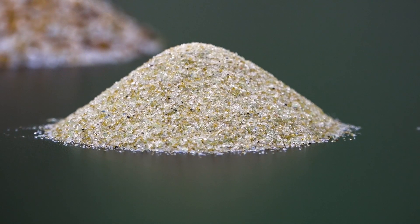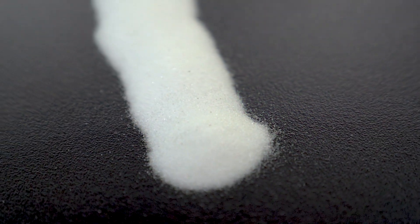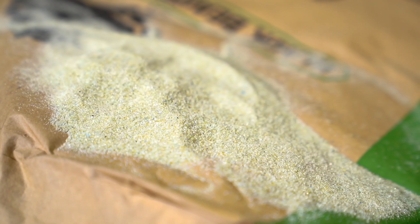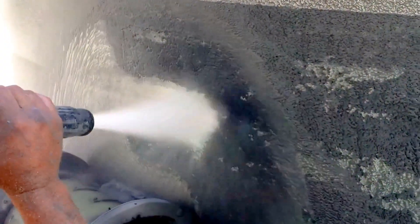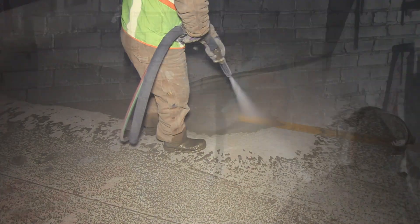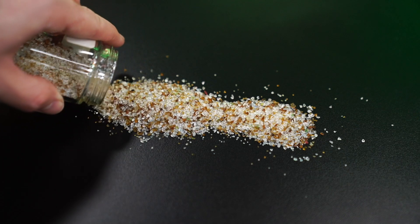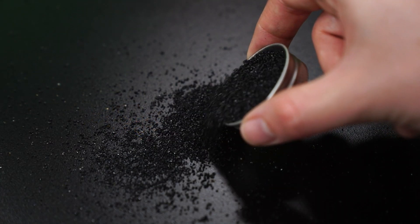Finer meshes like 60-100 and 40-70 are great for things like fiberglass, wood, concrete, and brick. Larger meshes work well for industrial machinery or tough coatings and corrosion.